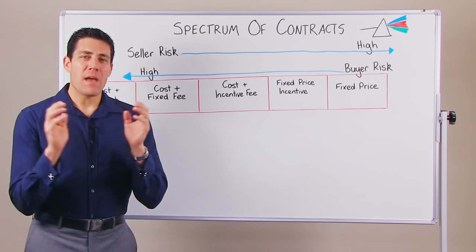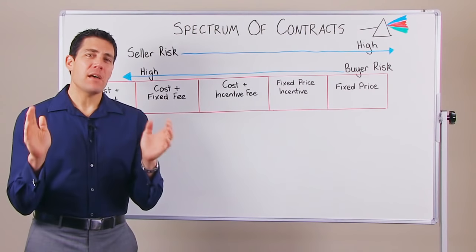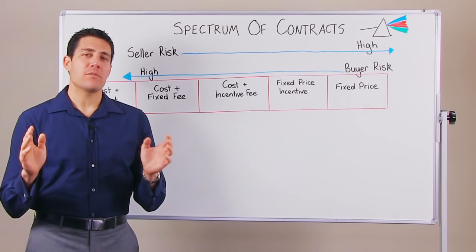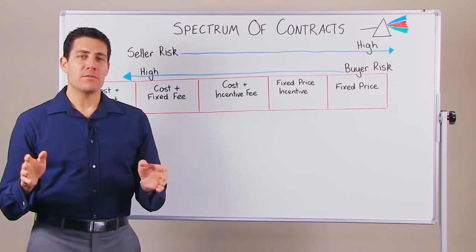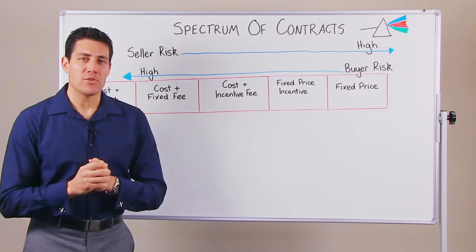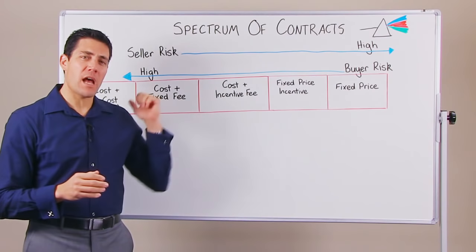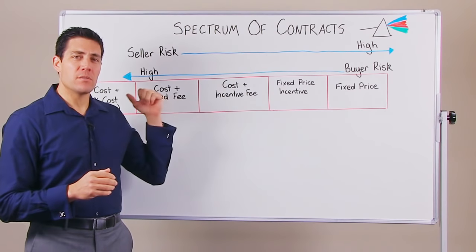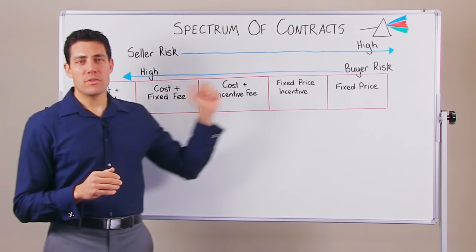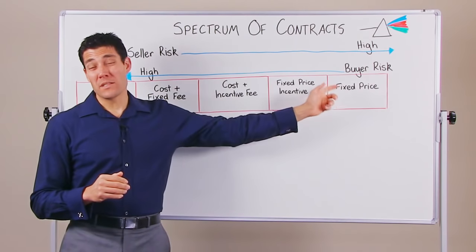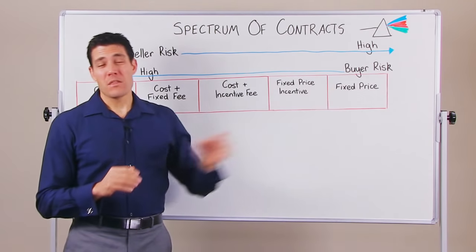We have basically five contracts that are available for us to use — five different types of contracts — and they range from those that are very high risk to the buyer to those that are a lot more lower risk for the buyer.